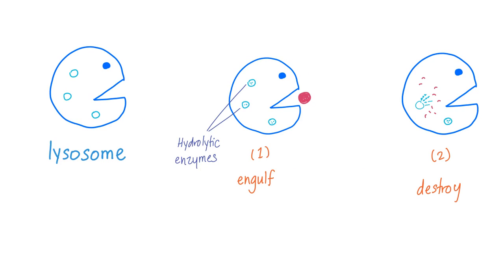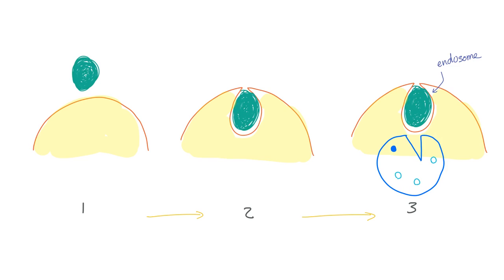Here is how Lysosome destroys stuff in two steps. Step one: it engulfs the waste product and brings it into contact with the hydrolytic enzymes. Step two: destruction. For endocytosis, stuff from outside the cell causes the membrane to fold inward — a process called invagination — forming an endosome. The Lysosome then destroys it before it touches the cytoplasm, because it may contain harmful material.